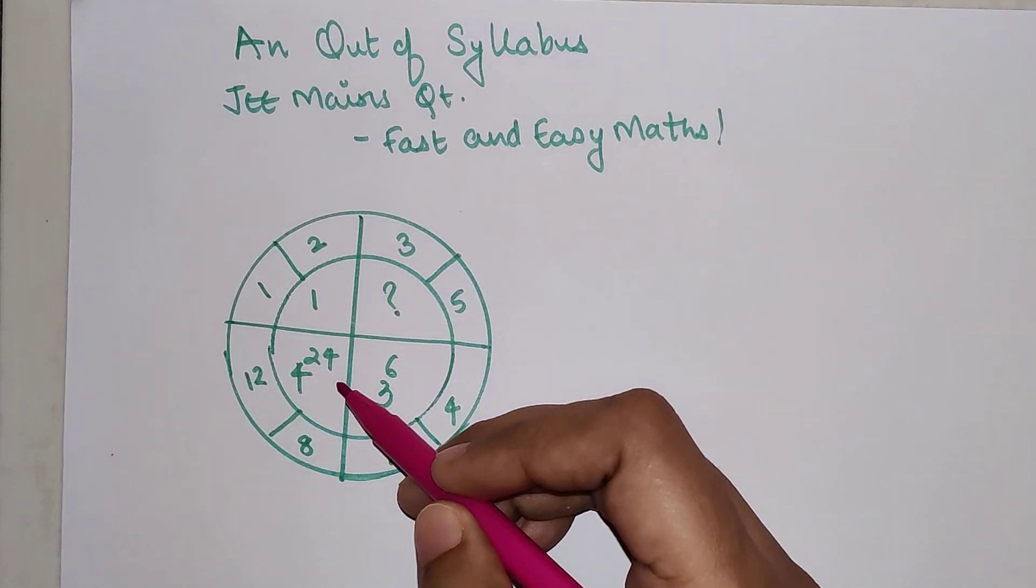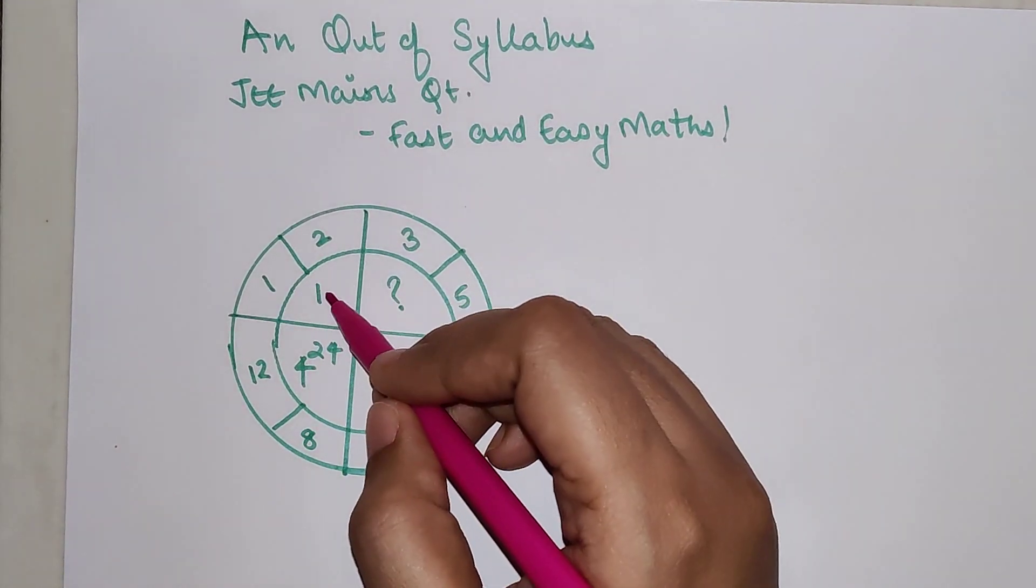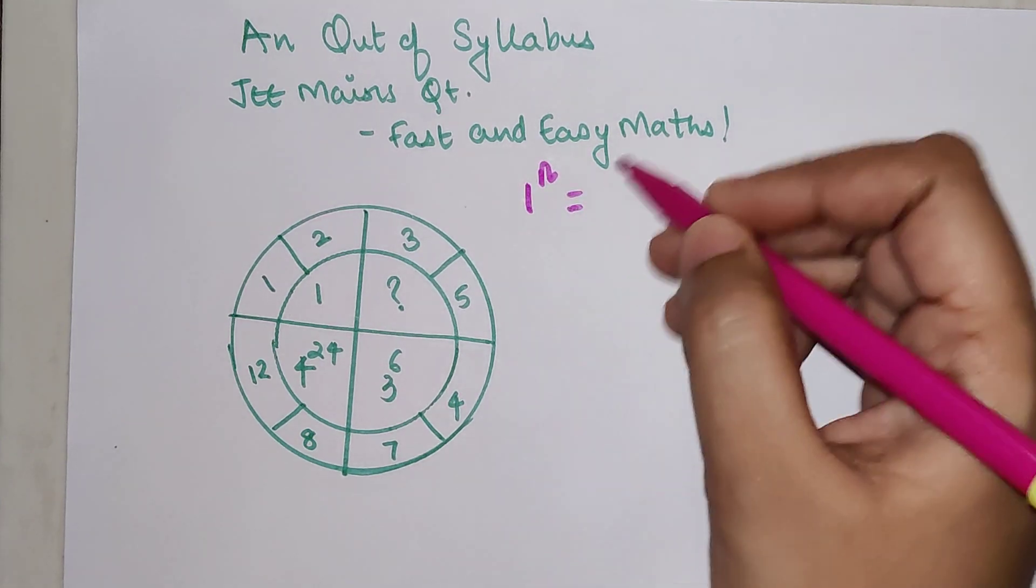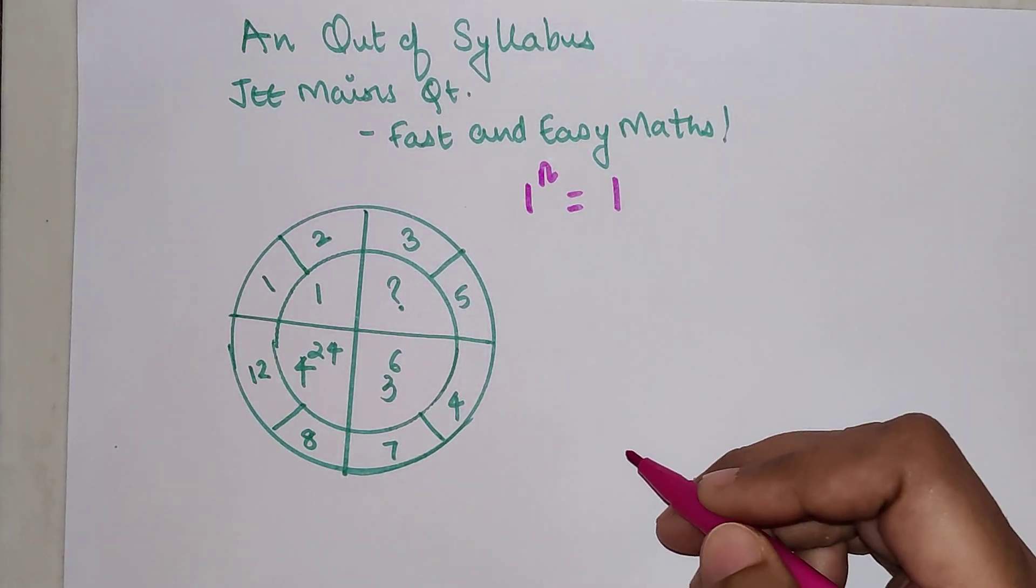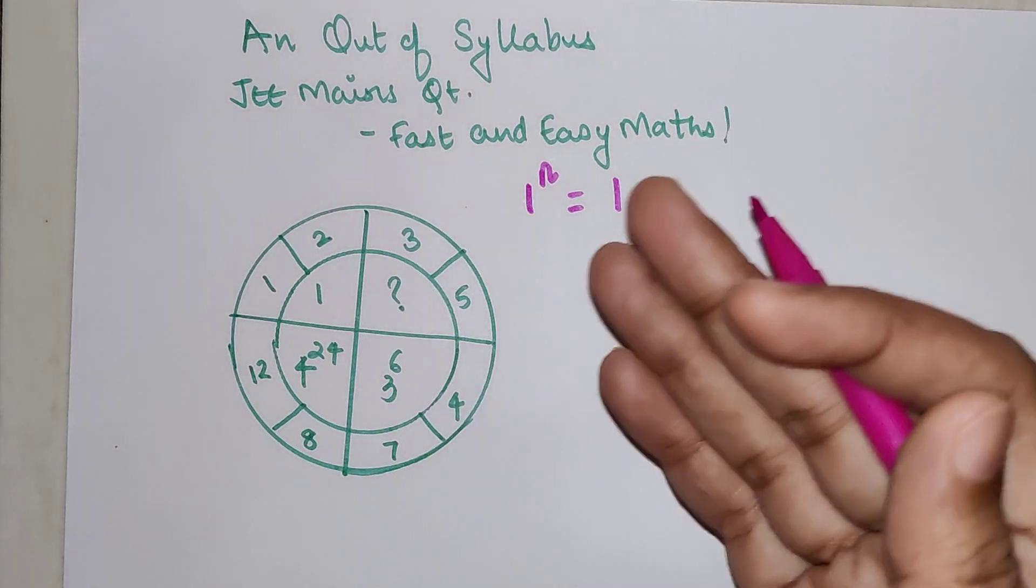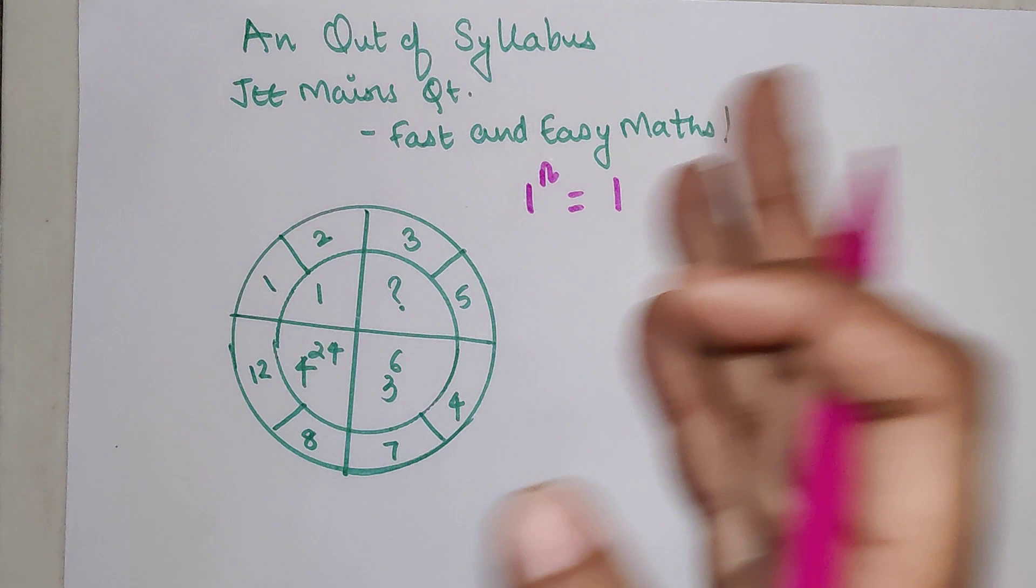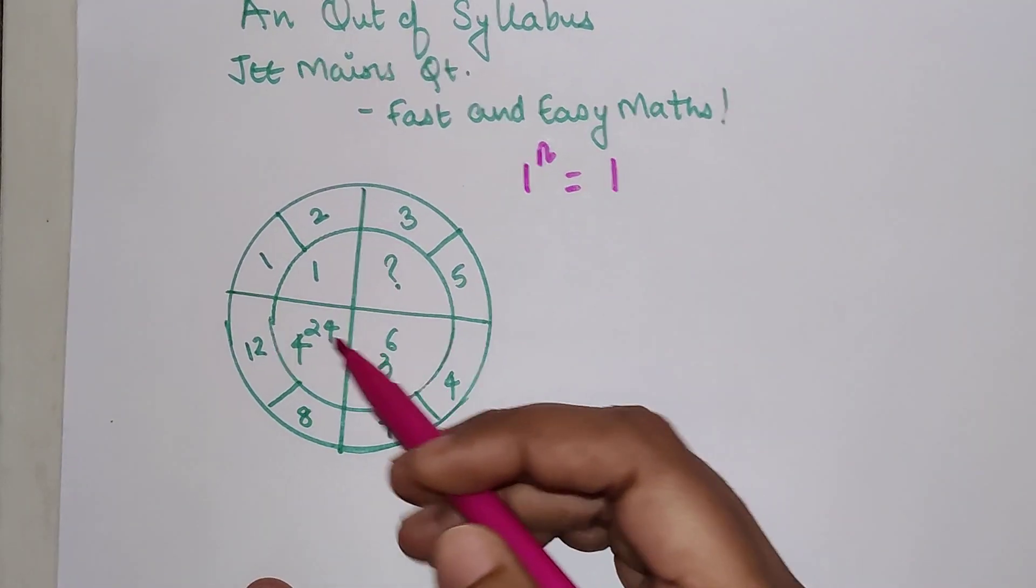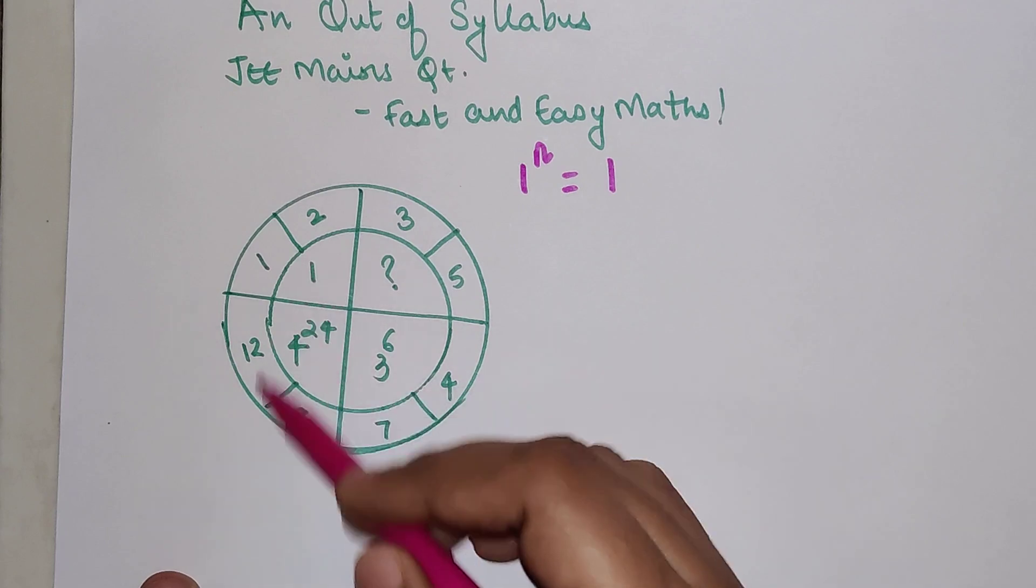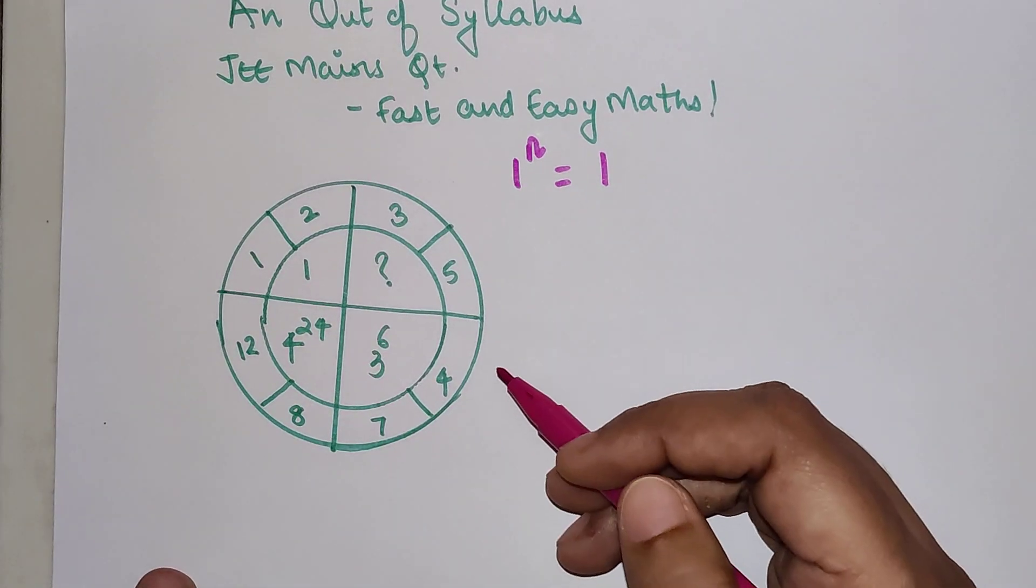Now please understand 1 when raised to anything, when raised to any power will always be 1. So here even if they have not given you any number in the index, you can assume that there is some raised to power because all the other ones in the inner circle have something which is raised to.